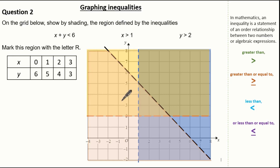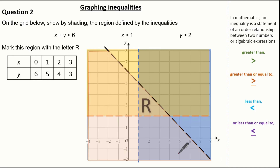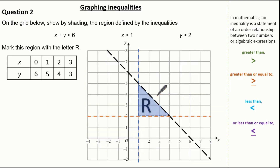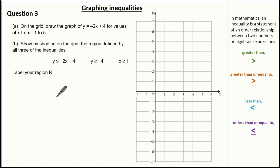Because I want x plus y less than 6, I'm looking at the region below this line. This region represents x plus y is less than 6. You'll notice I have a region which satisfies x greater than 1, a region which satisfies y greater than 2, and a region which satisfies x plus y less than 6 — and this region is labelled R, as this is where the three shaded areas overlap. I'm simply going to rub out the rest of the shadings I don't need, giving me the correct region R.